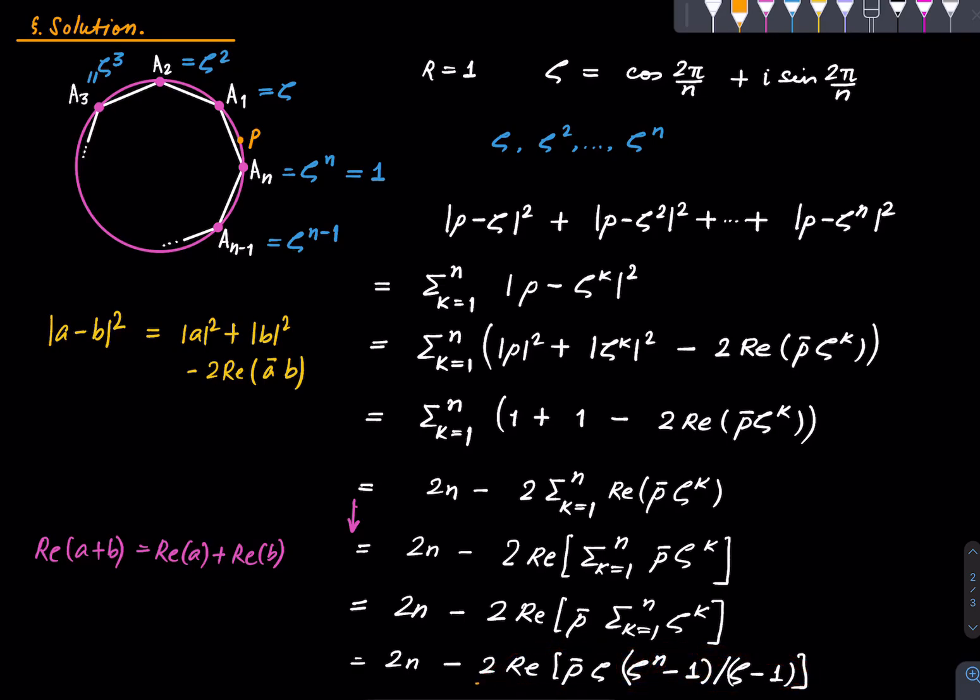So this whole thing is basically 0. And hence this summation is 2n and that's it.